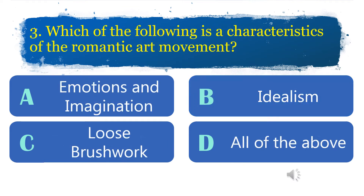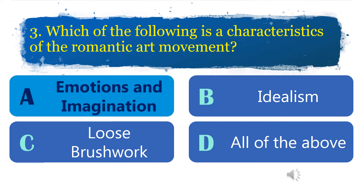Number 3: Which of the following is a characteristic of the Romantic art movement? A. Emotions and imagination. B. Idealism. C. Loose brushwork. D. All of the above. The correct answer for this item is letter A.